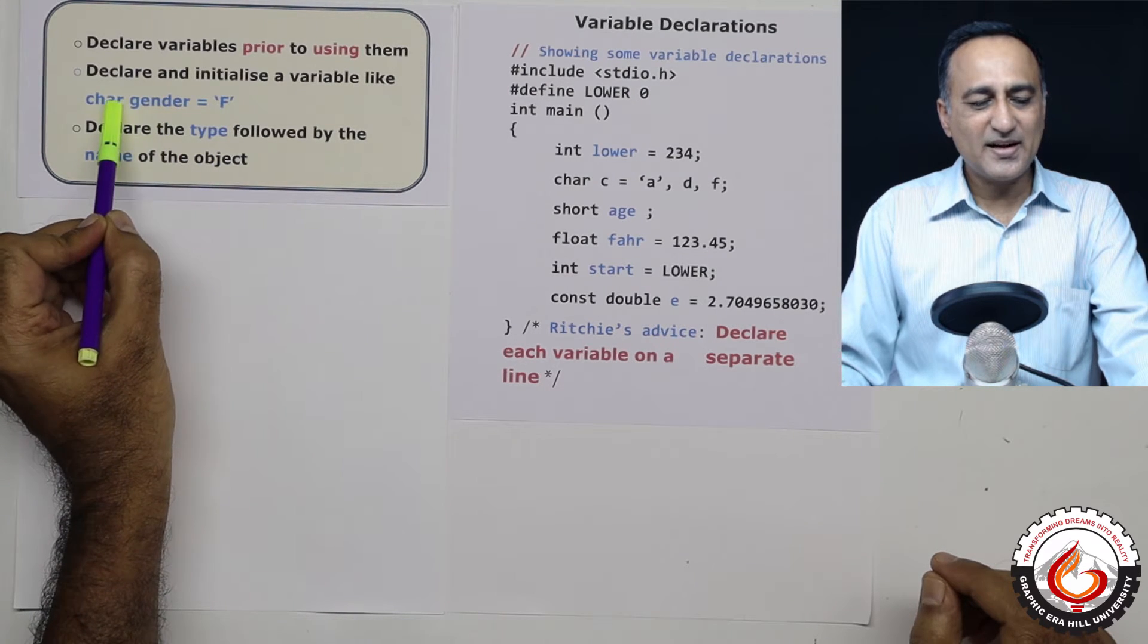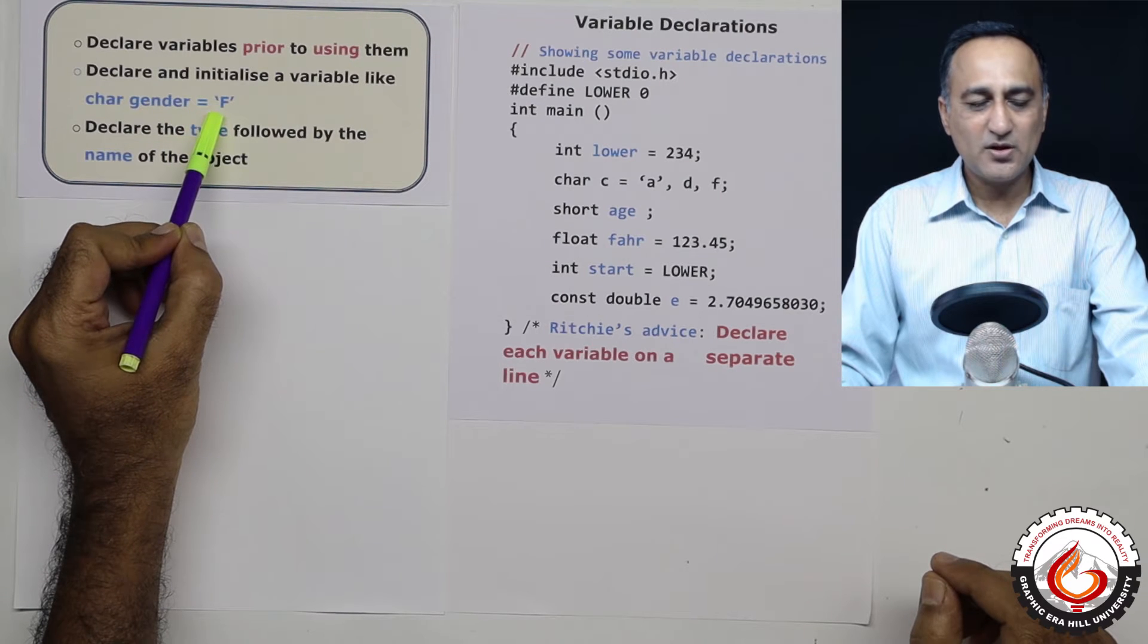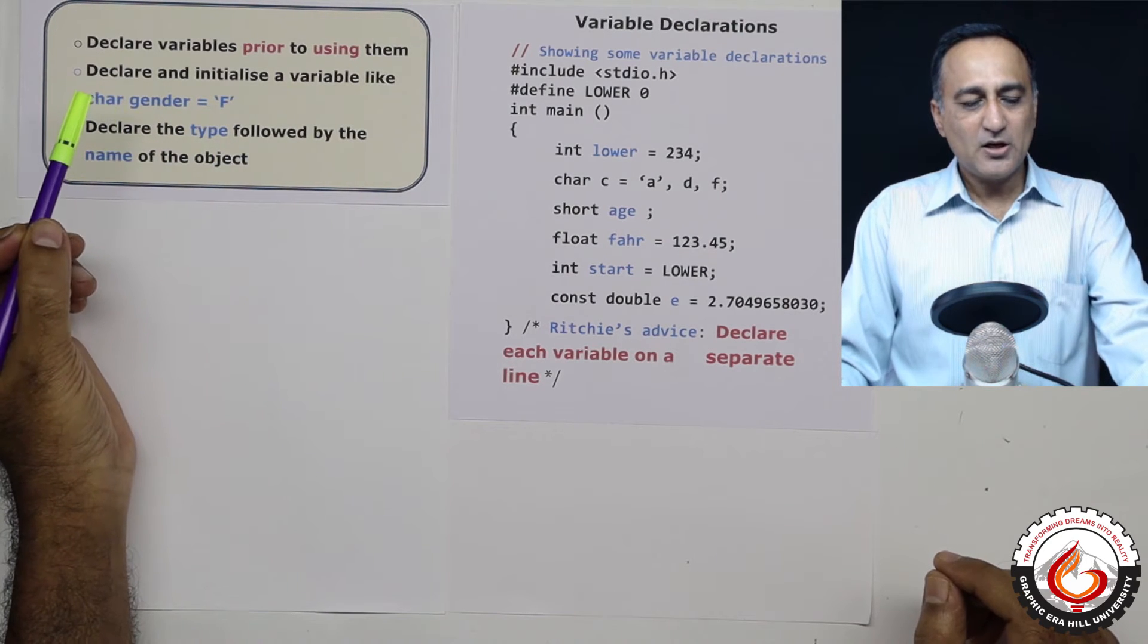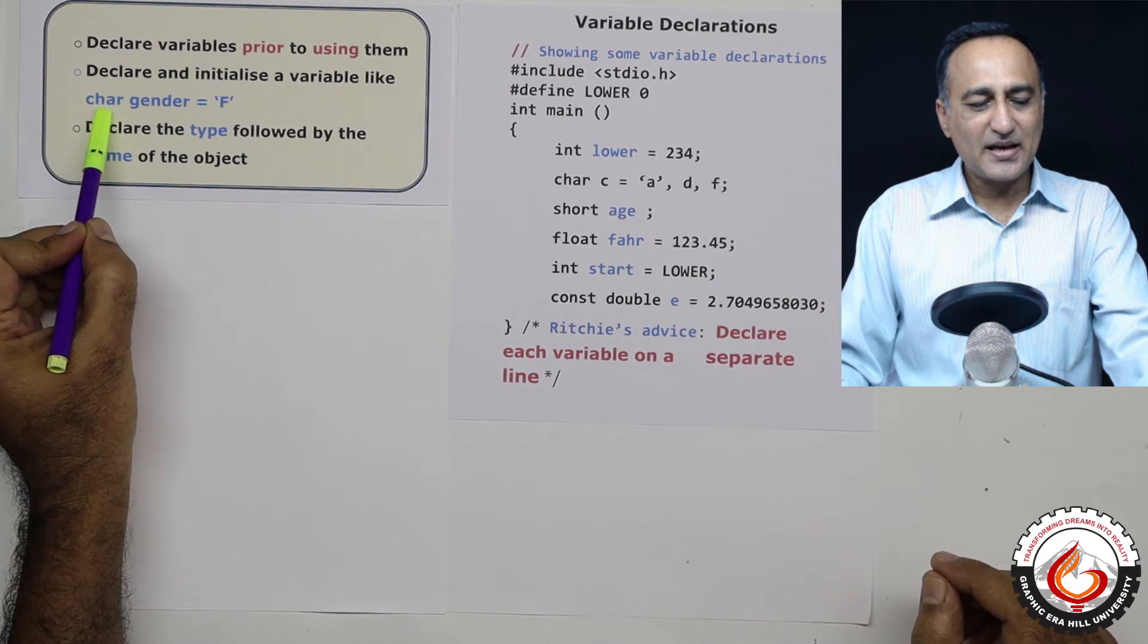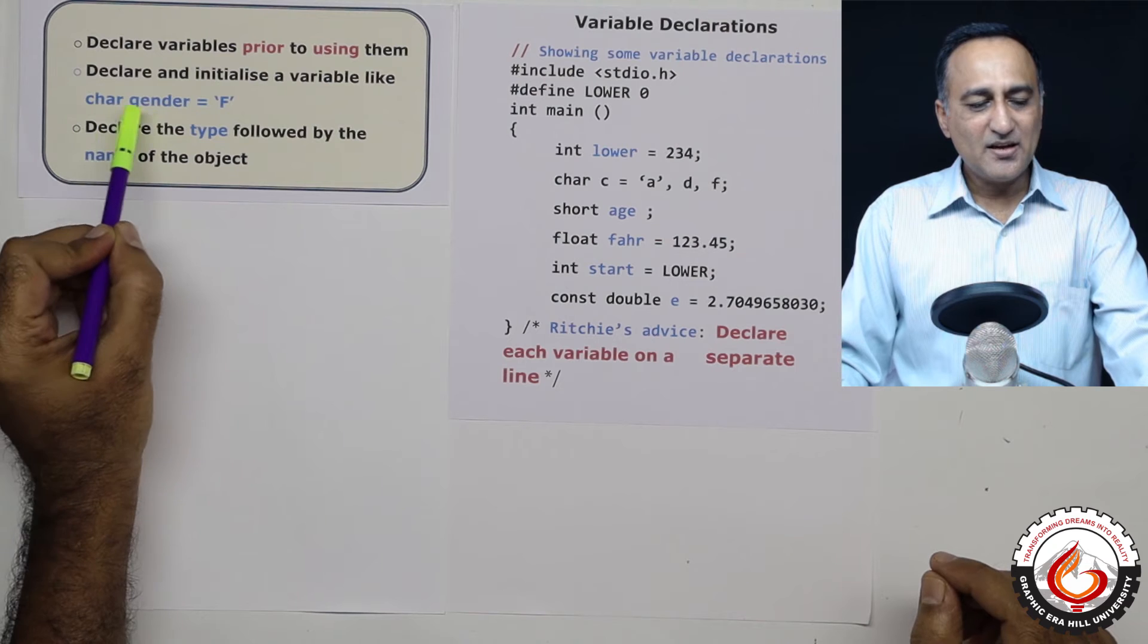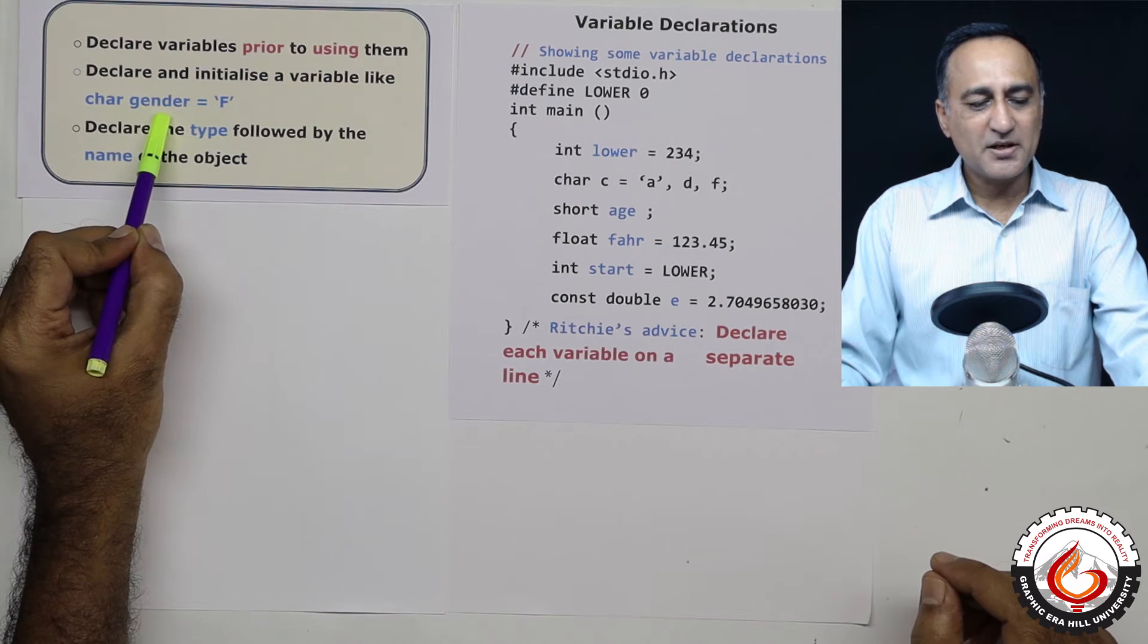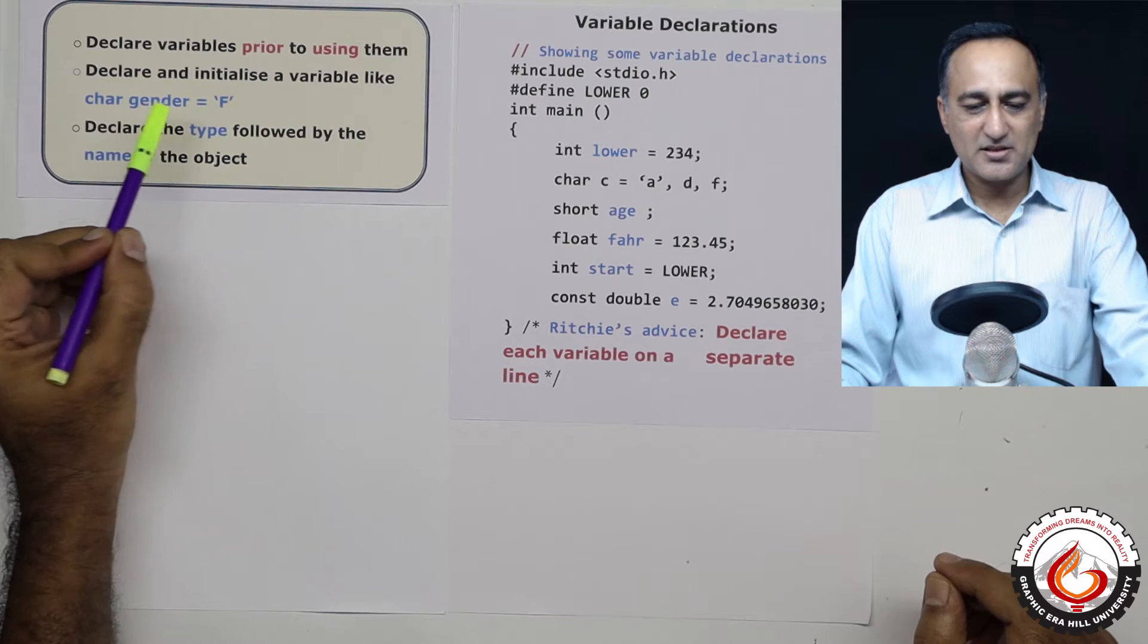This is the declaration of a character type of variable, as well as the initialization with the value f. Now what happens in the declaration is the first thing you will declare the type of the variable. You will say gender is of the type character, then you will follow by the name of the object, this is object variable type object, and then I will give it the initialization.